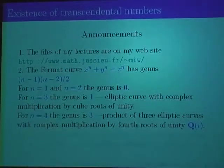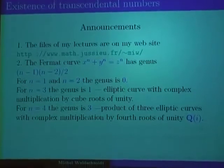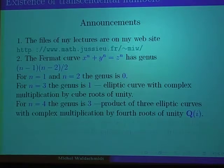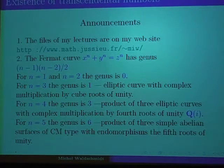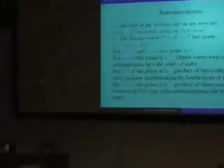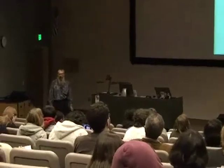The Abelian variety, the Jacobian, is a product of 3 elliptic curves with complex multiplication by the fourth root of unity. And this is because of those elliptic curves that we get the Chowla-Selberg formula and the values of Γ(1/4). Finally, for n equal to 5, the genus is 6, but it's a product of 3 simple Abelian surfaces — Abelian varieties of dimension 2 for the Jacobian. The endomorphisms are given by the fifth root of unity, and this is how Γ(1/5) comes into the picture.